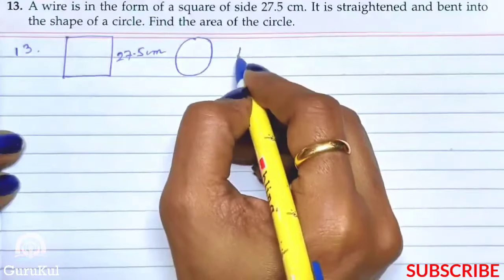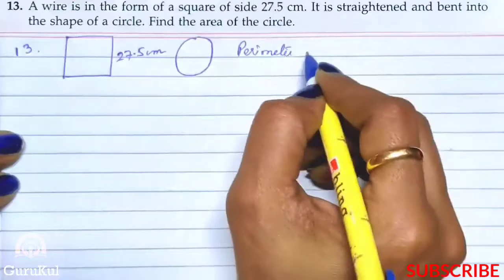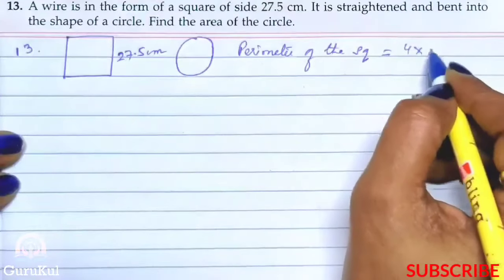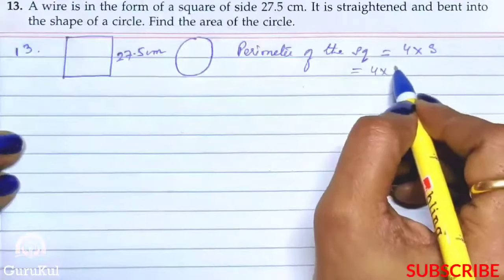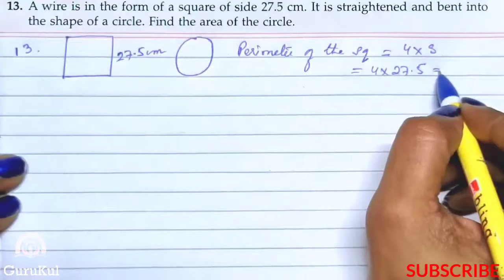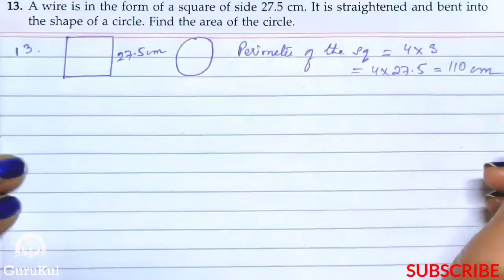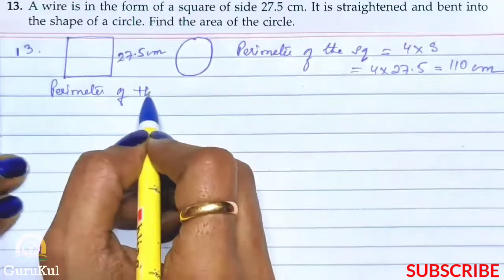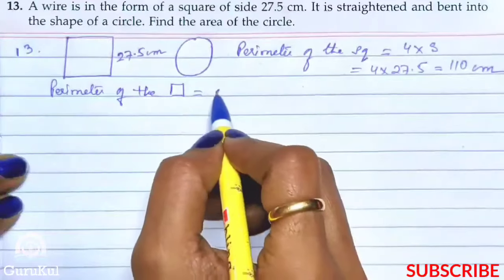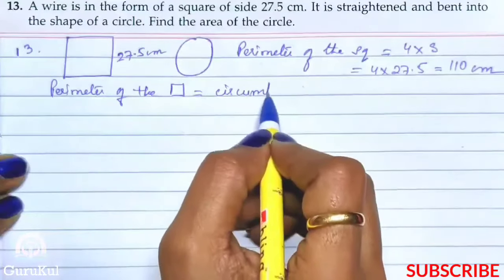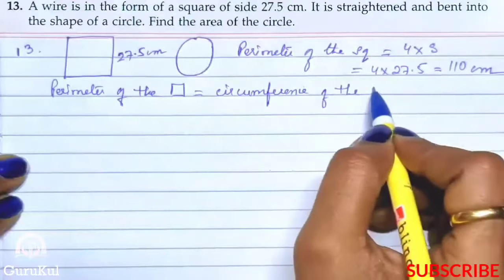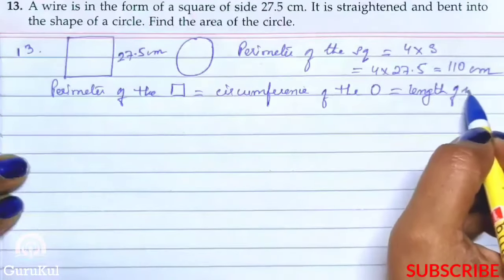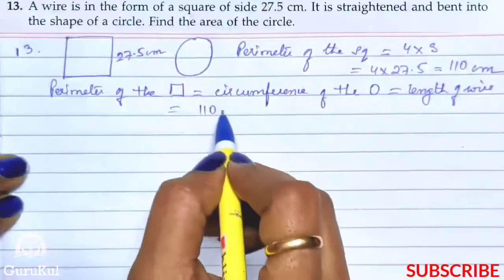So what are we going to do first? We are going to find perimeter of the square which is 4 into side. That gives us 4 into 27.5 which is 110 cm. Now perimeter of the square is equal to circumference of the circle which is equal to length of wire which is equal to 110 cm.